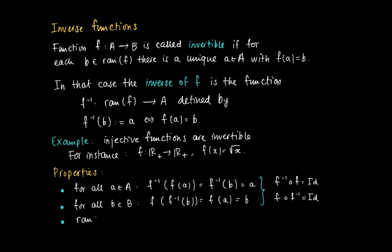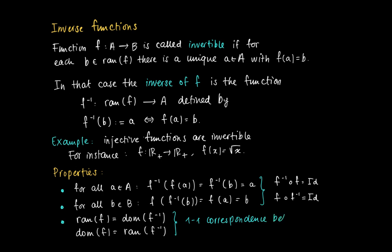Something else holds as well: the range of F equals the domain of F⁻¹, and the domain of F equals the range of F⁻¹. So for invertible functions there is a one-to-one correspondence between domain and range. If I pick something in the range, I can find its unique original in the domain, and if I pick something in the domain, there is exactly one element in the range.